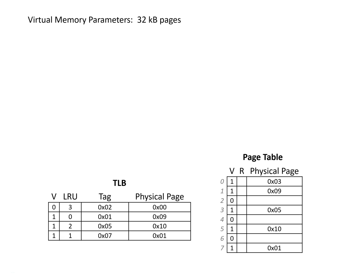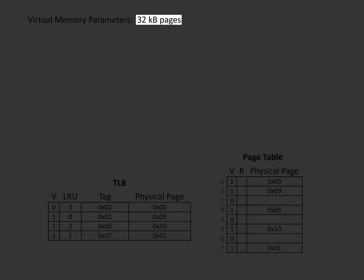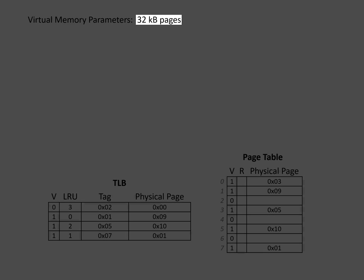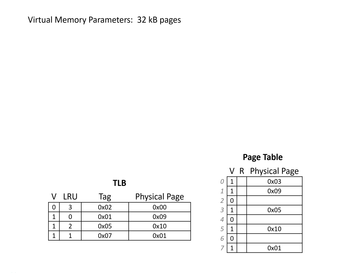In this video, we're going to look at how to translate a set of virtual addresses into physical addresses by making use of a TLB and page table. In this example, we're going to assume that we have 32 kilobyte pages. The first thing we need to do is figure out how many bits we need for the page offset — the bits we don't look at when determining which page an address corresponds to. With 32 kilobyte pages, we'd take log base 2 of 32,000, giving us 15 page offset bits.